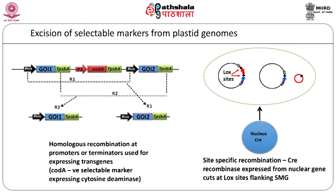While the selectable marker is very important for selection of homoplasmic regenerating plants, the presence of the marker may affect plastid function or may not be permissible under regulations concerning transgenic plants. Hence, methods have been developed for their removal. Homologous recombination between two direct repeats engineered to flank a selectable marker leads to marker removal under non-selective growth conditions. Another strategy involves using the Cre-lox site-specific recombination system, where the selectable marker gene is flanked by lox sites.